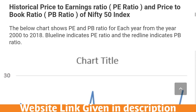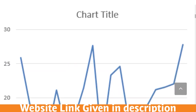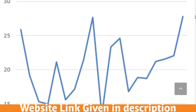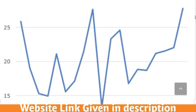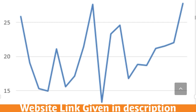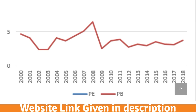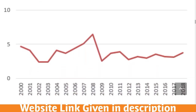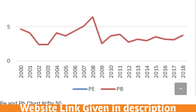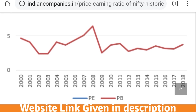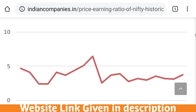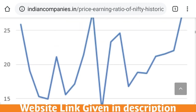Let's discuss the historical PE and PB ratio of the Nifty 50 index. This chart shows the PE ratio of Nifty 50 from 2000 to 2018. You can check the link of this article in the description below. The red line indicates the price-to-book ratio and the blue line indicates the price-to-earning ratio.